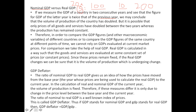Nominal GDP is the pure increase in the total value of GDP, arrived at by multiplying the units produced with the price of production. It is possible that only prices of all goods and services have doubled, whereas the volume of production has remained constant. So how do we find out the real growth in an economy? That is found out through Real GDP.